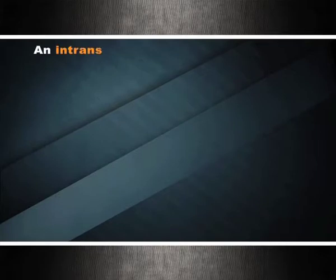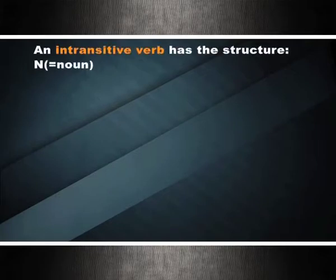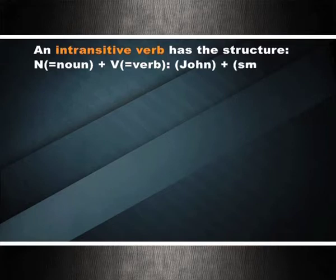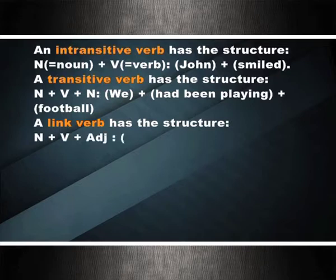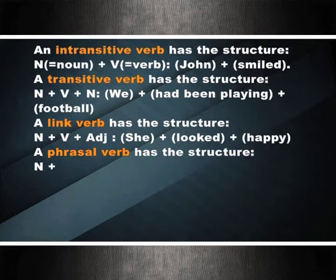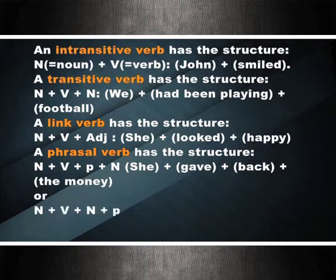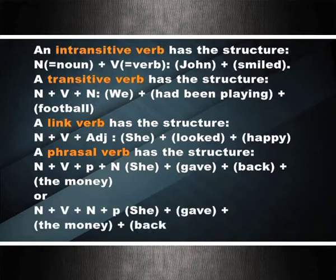The different verb structures: the structure of the clause depends on the verb. An intransitive verb has the structure N + V — for example, John smiled. A transitive verb has the structure N + V + N — we had been playing football. A link verb has the structure N + V + adjective — she looked happy. A phrasal verb has the structure N + V + particle + N — she gave back the money — or N + V + N + particle — she gave the money back.